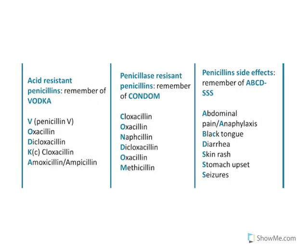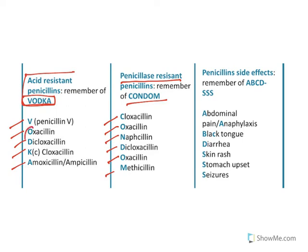To remember the acid-resistant penicillins easily, the mnemonic is VODCA: Penicillin V, Oxacillin, Dicloxacillin, Cloxacillin, Amoxicillin. The penicillinase-resistant penicillins can be remembered by the mnemonic CONDM: Cloxacillin, Oxacillin, Nafcillin, Dicloxacillin, Methicillin. Note that oxacillin and dicloxacillin appear in both lists — they have both acid-resistant and penicillinase-resistant properties.